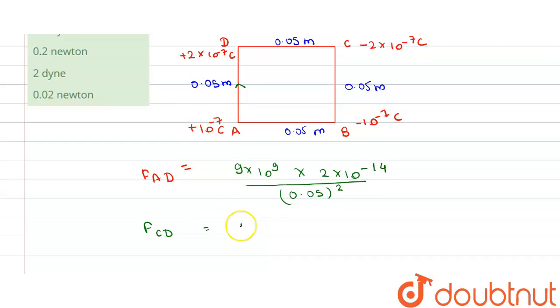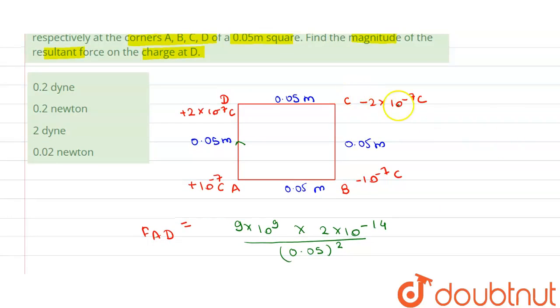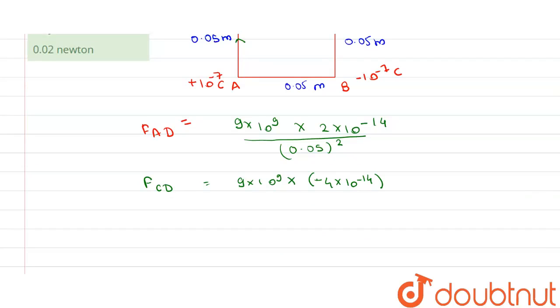this will be equal to 9×10^9 into -4×10^-14, because this is -2×10^-7 coulomb.